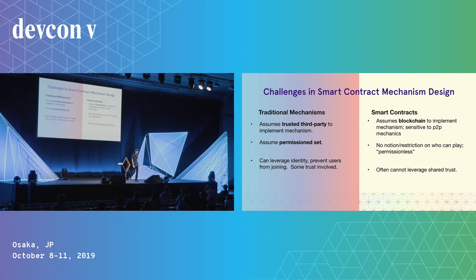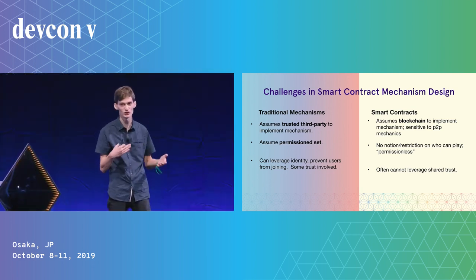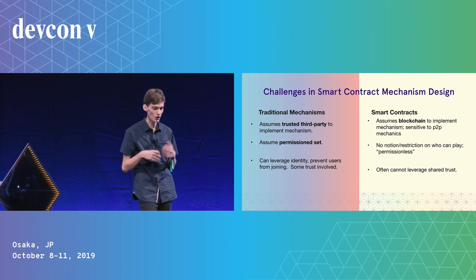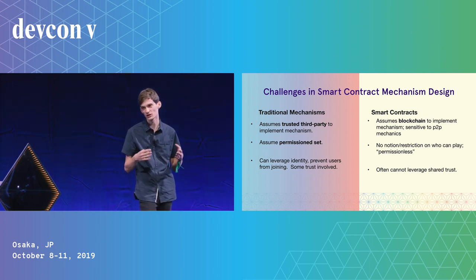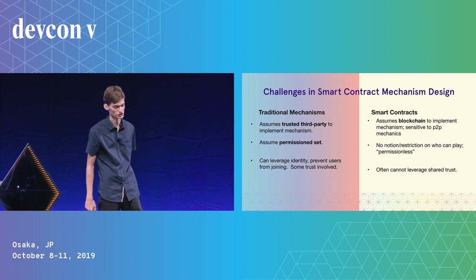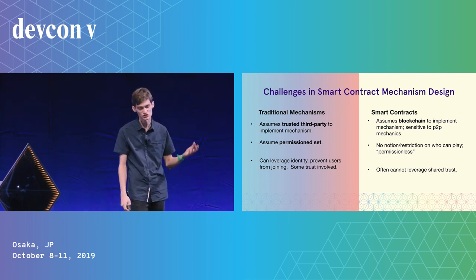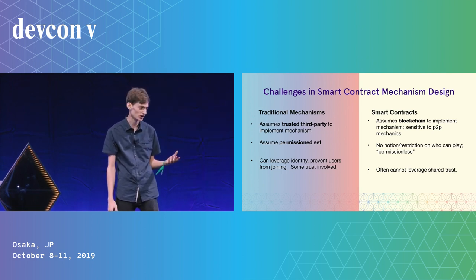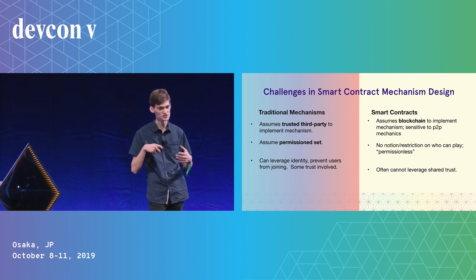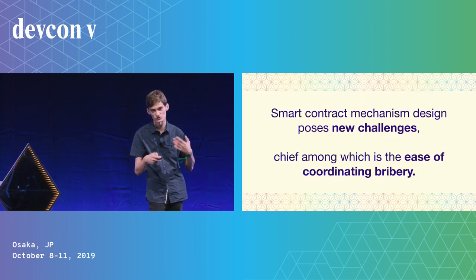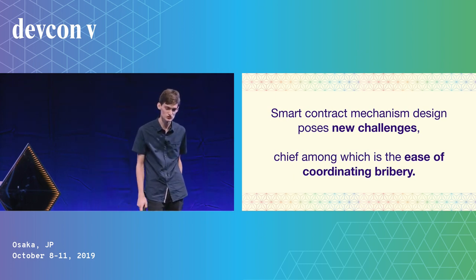Unfortunately, there are challenges that make smart contracts very different from traditional mechanisms. In traditional mechanisms you have a trusted third party, whereas blockchains introduce gotchas like how the peer-to-peer network works or how miners choose transactions. Also, traditional mechanisms assume a permissioned set of players — a known fixed set — like eBay or Google controlling auction participants and leveraging identity. In smart contracts, you might only see private keys and signatures without that shared trust.